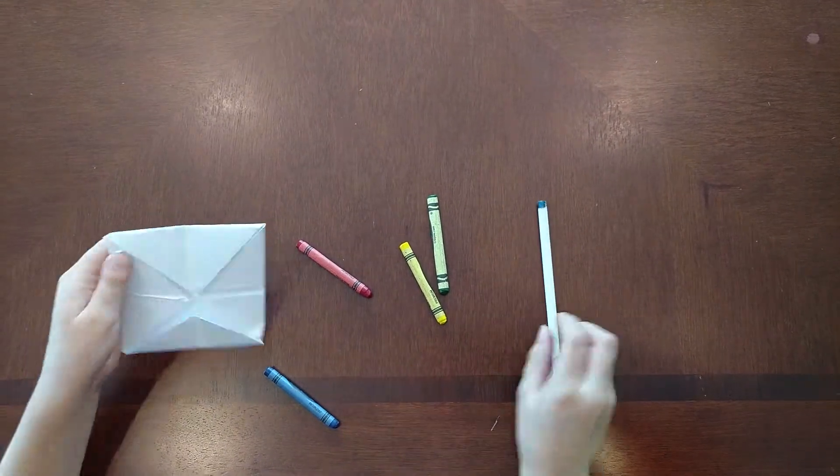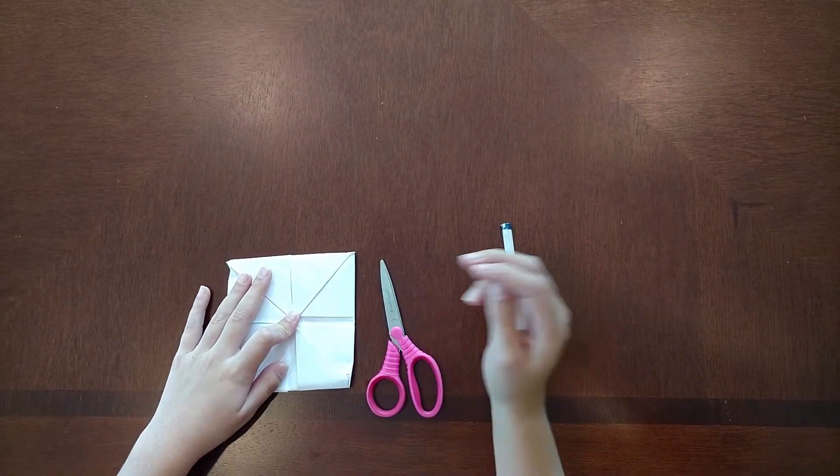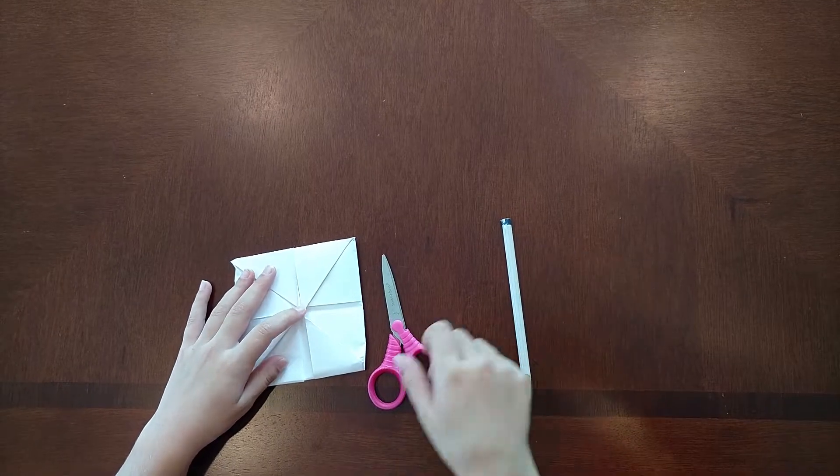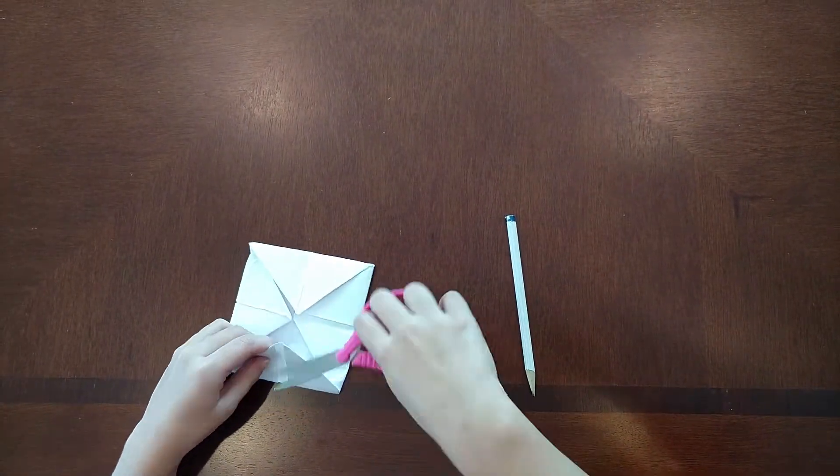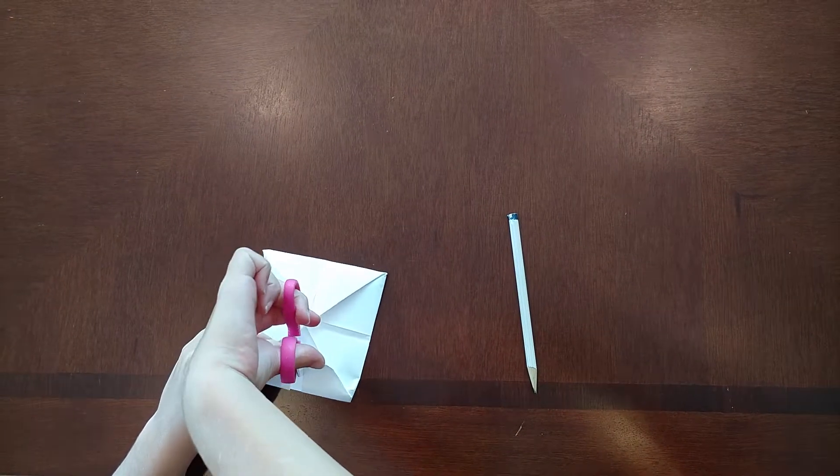Now we're going to flip it over. Now that we've flipped it over to the other side, we're going to use our scissors. There will be a line right here. Cut on the line.